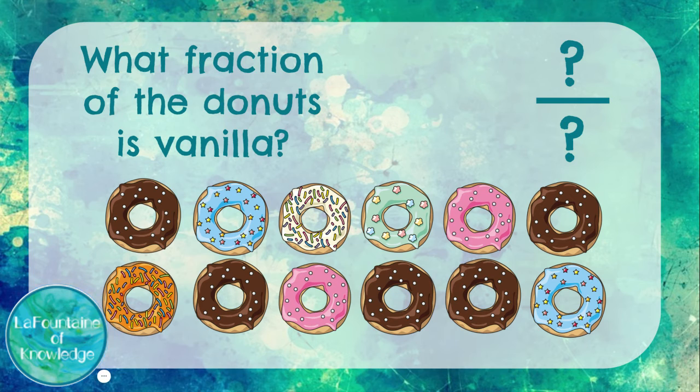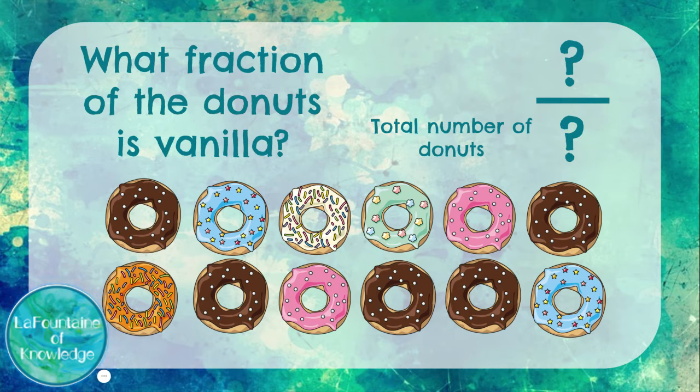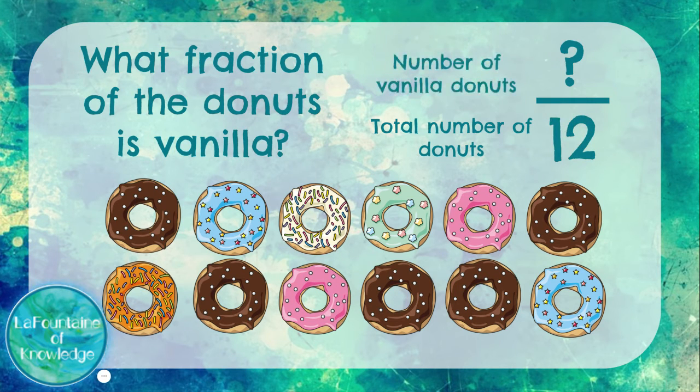I could also use a fraction to name the vanilla doughnuts. Once again, the denominator is the total number of doughnuts, which is still 12, but this time the numerator is the number of vanilla doughnuts, which is one. One-twelfth of the doughnuts are vanilla.